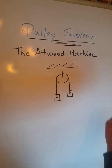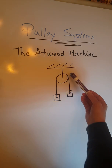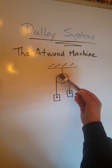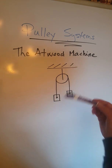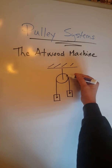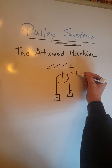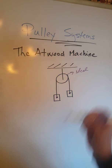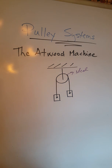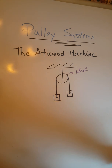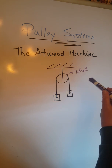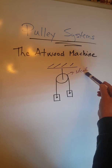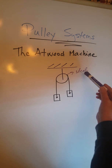For all our pulley problems, we are going to consider our pulleys to be fixed and what we call ideal pulleys. Ideal pulleys have no mass and there is no friction. So all our pulleys will be considered ideal — massless and frictionless.